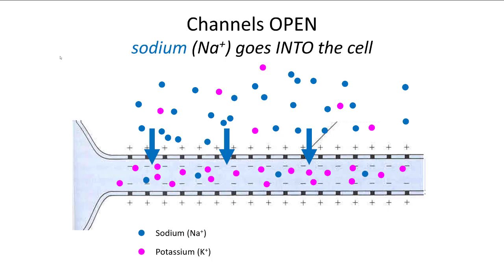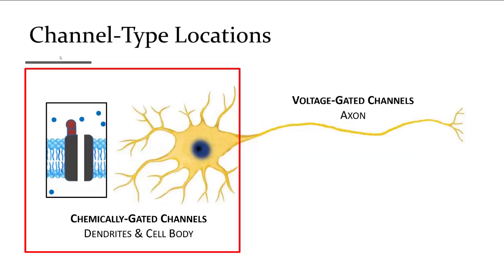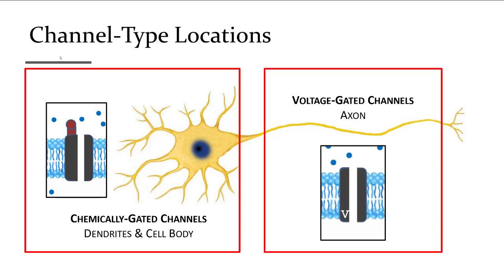The channels are specific to an ion. The two we'll focus on for the neuron are sodium and potassium — sodium represented in blue, potassium in pink. Sodium is abundant outside the cell; when sodium channels open, sodium rushes into the cell, making the inside more positive. Potassium is more abundant inside; when potassium channels open, potassium exits the cell. Because potassium is a positive ion, its exit causes the cell to become more negative. Chemically gated channels are on the body and dendrites, receiving neurotransmitters. Voltage-gated channels are along the axon, activating sequentially in one direction toward the axon terminal.